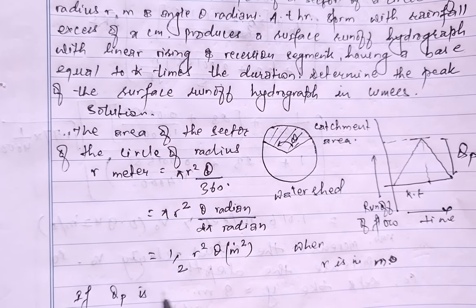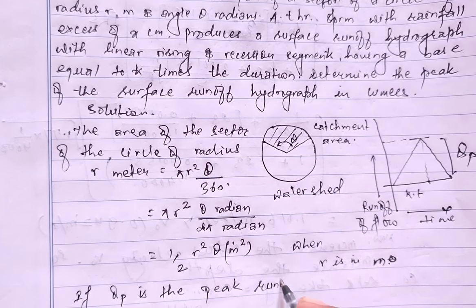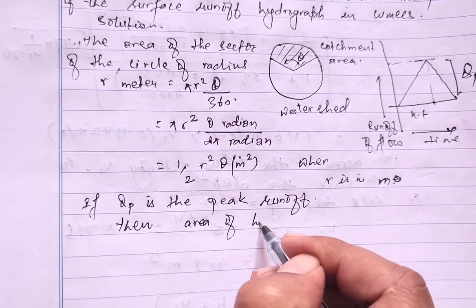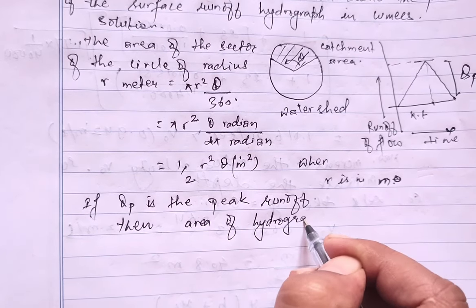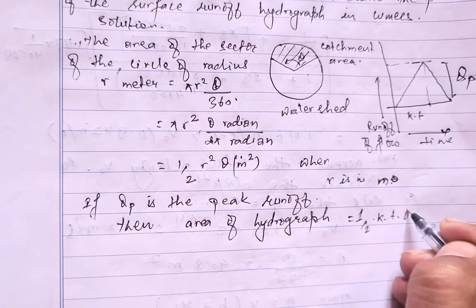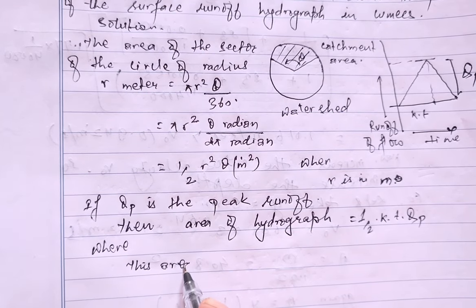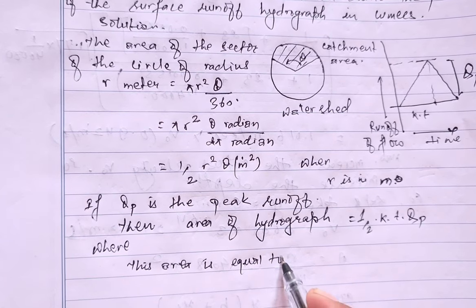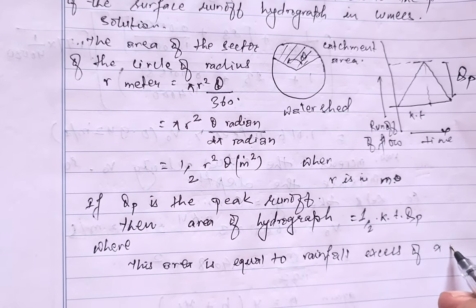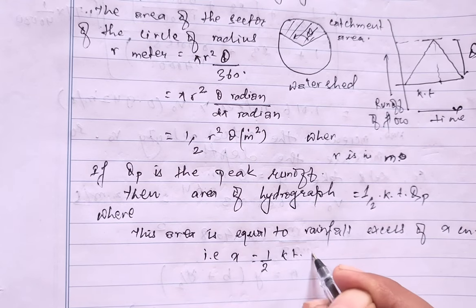Here Qp is the peak discharge. The area of hydrograph can be given as 1/2 × k × t × Qp, where this area equals rainfall axis of x centimeter, that is x = 1/2 kt × Qp.